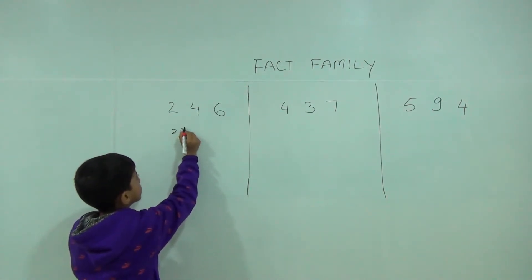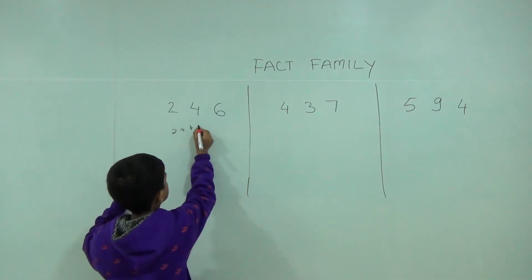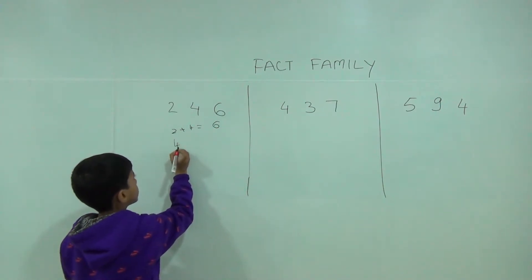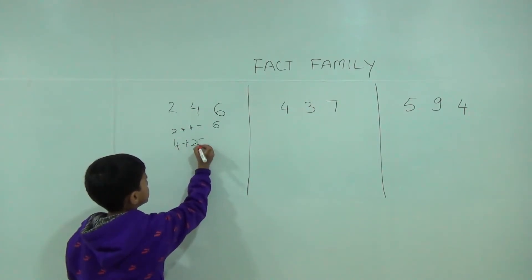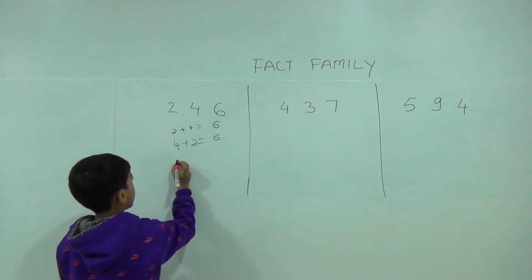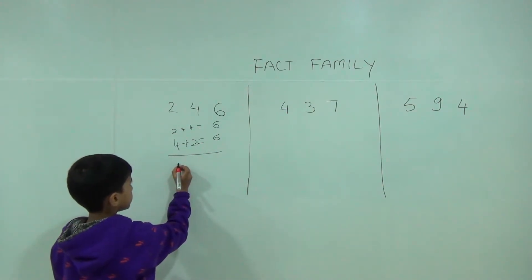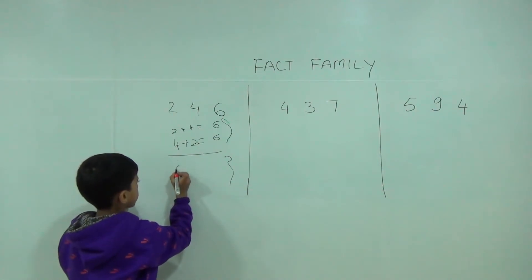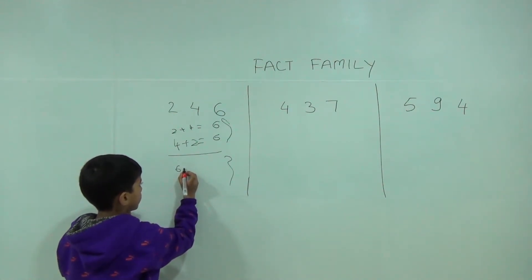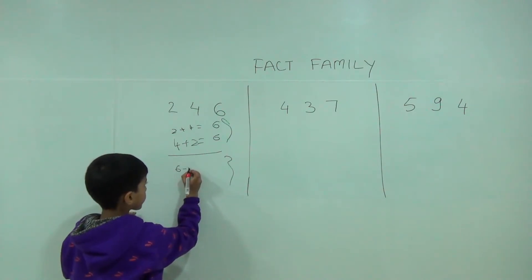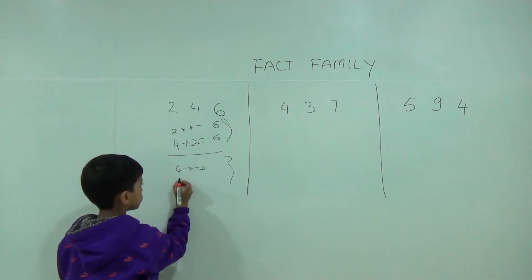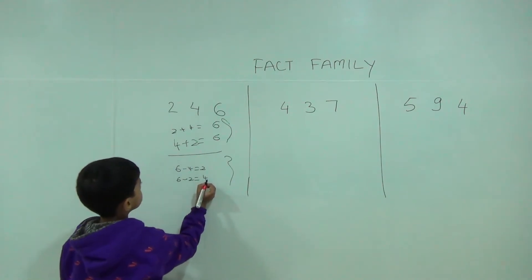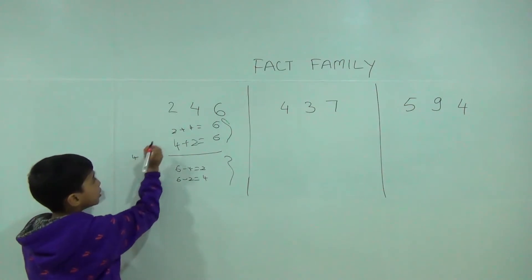2 plus 4 is equal 6, and 4 plus 2 is equal 6. Now we will do subtraction: 6 minus 4 is equal 2, and 6 minus 2 is equal 4. So we can do four equations.